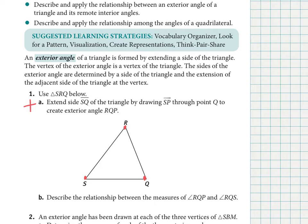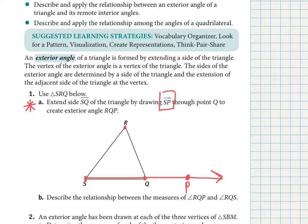If we extend side SQ by drawing a ray — the symbol has one arrow on the top and the other end is just a dot — it starts at the first letter and continues in one direction. It doesn't go both directions, but it does extend forever in one direction. They want us to draw a ray SP, so I need to put a point P somewhere around here. That red ray I just drew is ray SP. We continued it through point Q, and we created an exterior angle RQP.